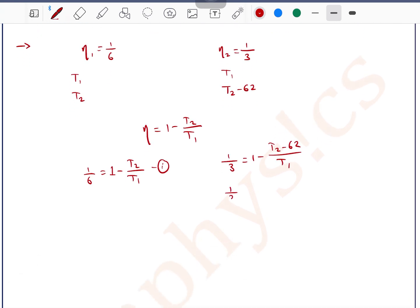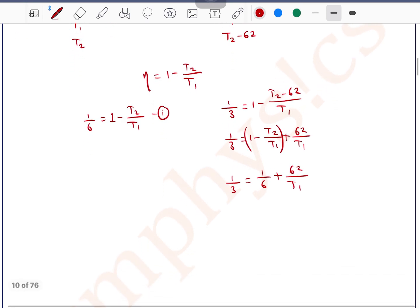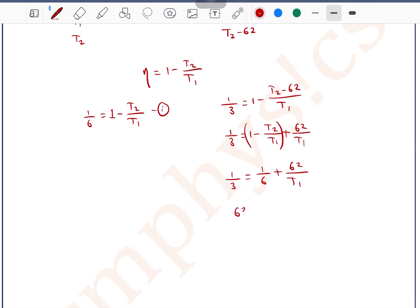And from the second data, we can write 1 by 3 is equal to 1 minus T2 minus 62 divided by T1. So we can write 1 by 3 is equal to 1 minus T2 by T1 plus 62 by T1. From equation number 1, we can write 1 minus T2 by T1 is equal to 1 by 6. So 1 by 3 is equal to 1 by 6 plus 62 divided by T1.